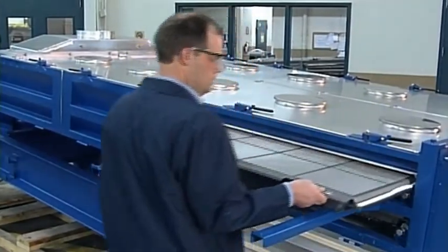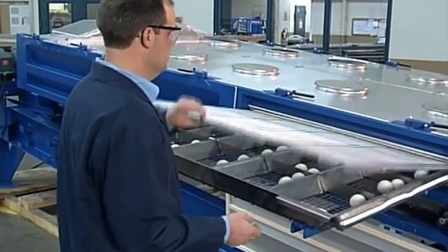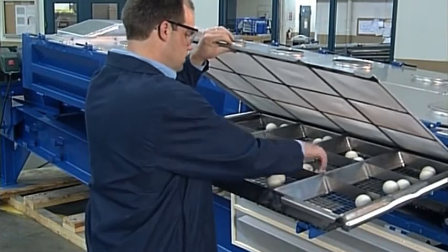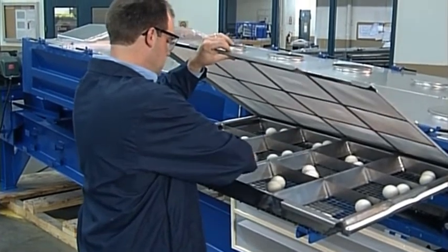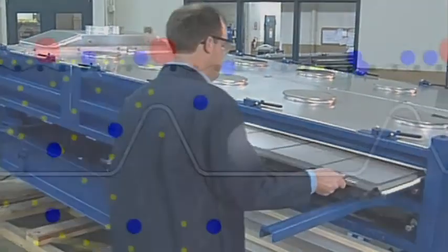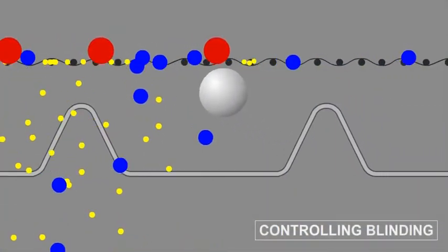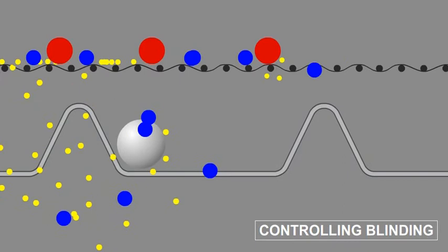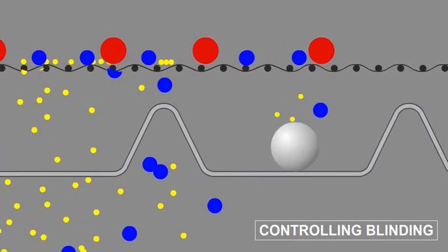Rotex screeners utilize a ball mesh cleaning system, as seen here, in order to control the tendency of materials to blind the screens. The long-stroke gyratory reciprocating motion drives the mesh cleaning balls into the underside of the screen, cleaning out the material.